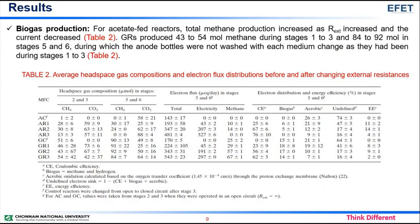Biogas production: For acetate-fed reactors, total methane production increased as external resistance increased and the current increased, as shown in Table 2. Glucose-fed reactors produced 43 to 54 moles of methane during stages 1 to 3 and 84 to 92 moles in stages 5 and 6, during which the anode bottles were not washed with each medium change as they had been during stages 1 to 3, as shown in Table 2.